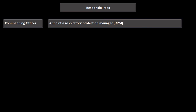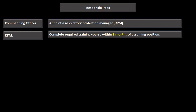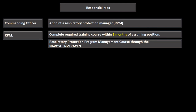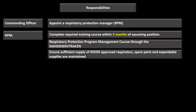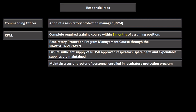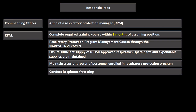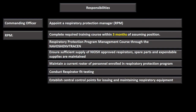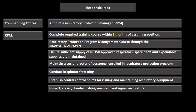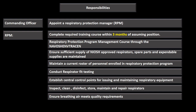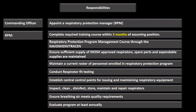The Commanding Officer appoints a Respiratory Protection Manager (RPM). Once assigned, the RPM has three months to complete the Respiratory Protection Program Management Course through the Navy Occupational Safety Health and Environment Training Center. The RPM must ensure sufficient NIOSH-approved respirators and supplies, maintain a roster of enrolled personnel, conduct fit testing, establish control points, inspect and maintain respirators, ensure breathing air quality, and evaluate the program at least annually.